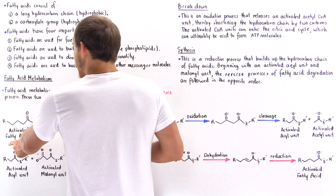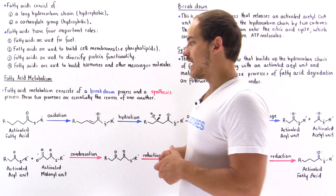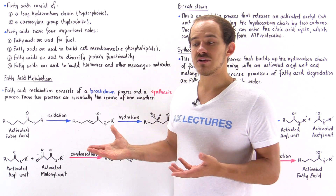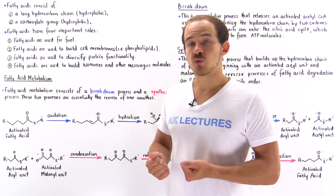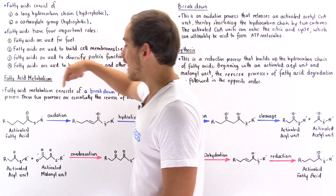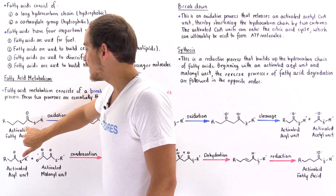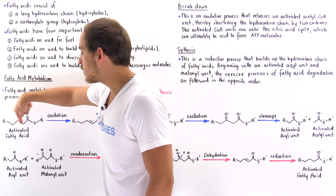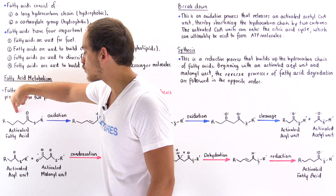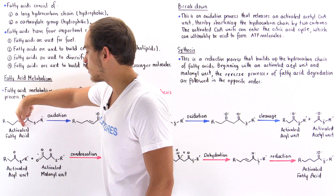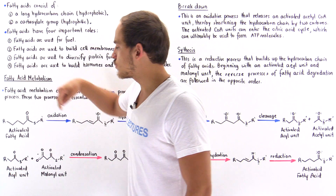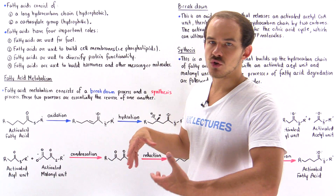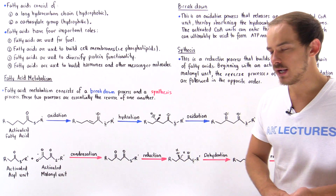We take the activated fatty acid and allow it to undergo an oxidation step, where we're essentially extracting electrons. More specifically, we extract an H atom from this carbon and an H atom from this carbon. The electrons left over on these two carbons — one electron here, one electron here — are used to generate a pi bond. So going from this molecule to this molecule, we ultimately form a double bond.